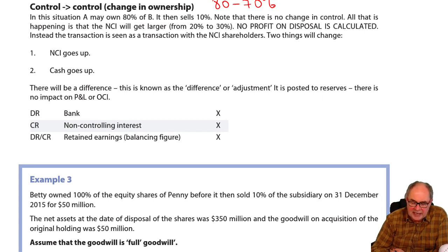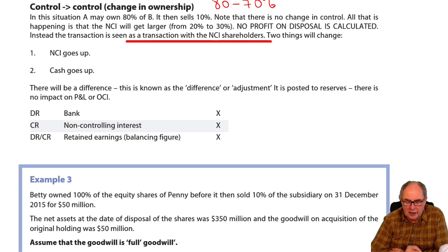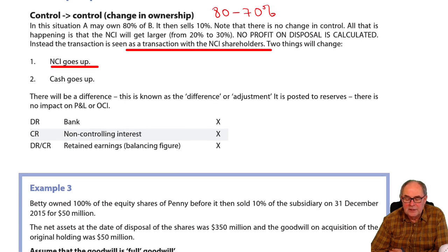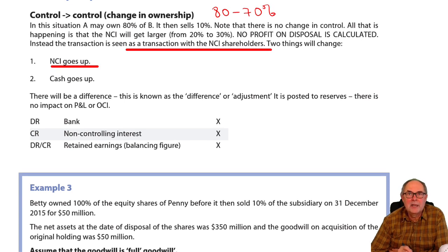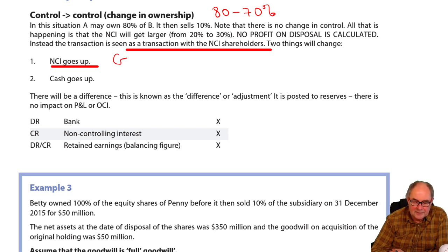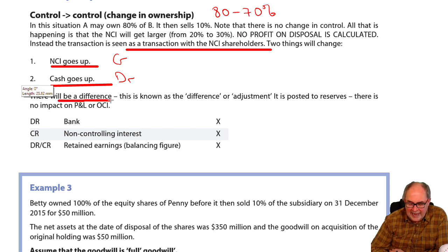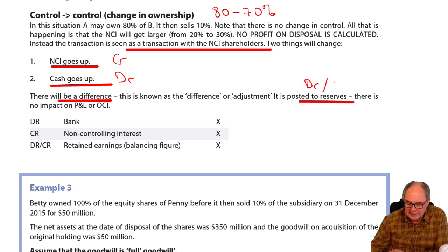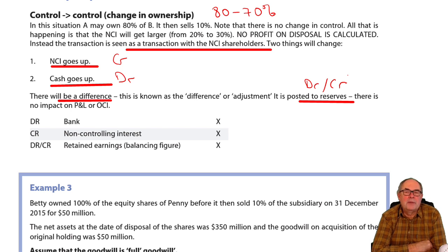As it says in the notes here, this is a transaction again with the NCI or minority shareholders. NCI will go up this time — in my scenario, from 20% to 30%. Bad news, that's a credit. Cash will go up. Good news, that's a debit. The difference between them will end up being posted to reserves. That could be a debit or a credit — it just depends. And essentially, in one sense, it's almost to stop the balance sheet not balancing.